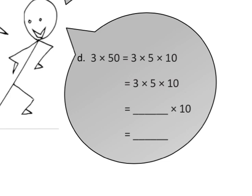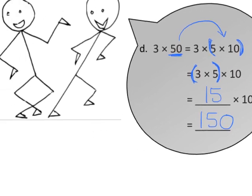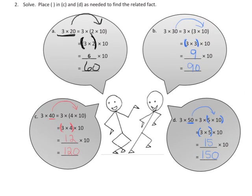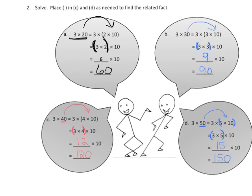And the last one, 3 times 50. We can rewrite that 50 as, technically we should put parentheses here, 5 times 10. Then we can regroup using the associative property to make that 3 times 5 times 10, which gives us 15 times 10, which gives us 150.